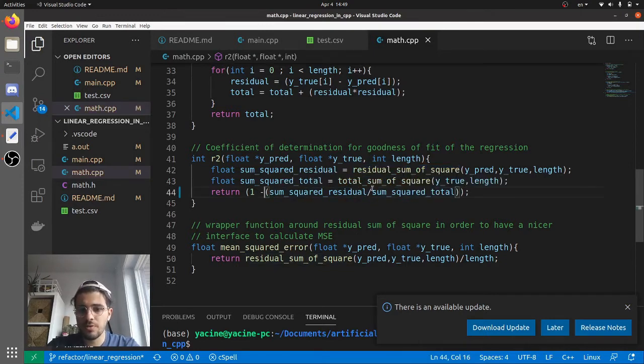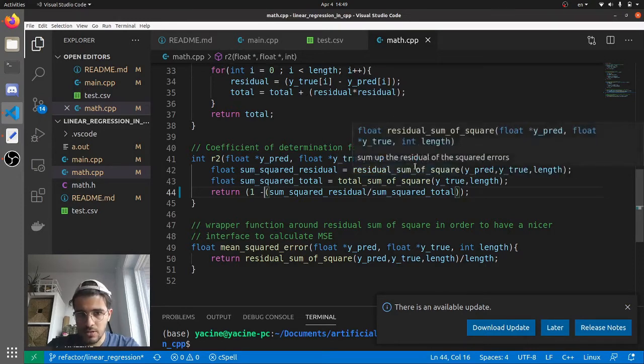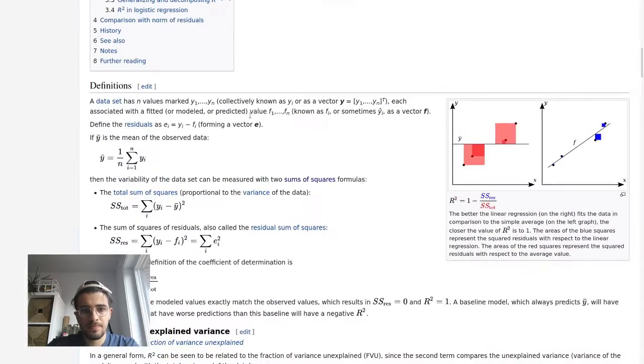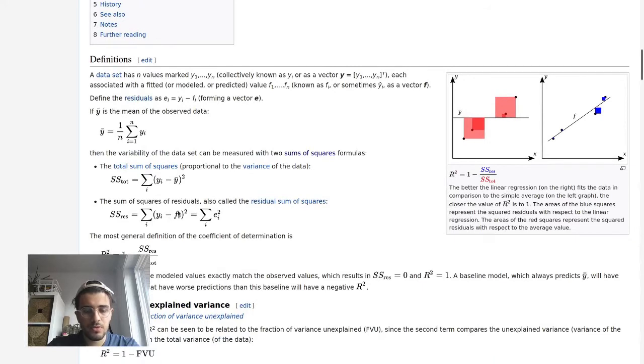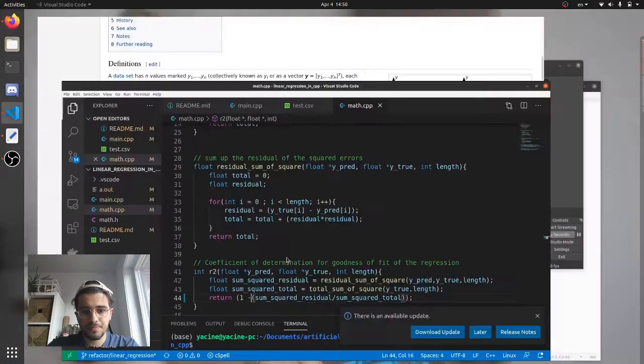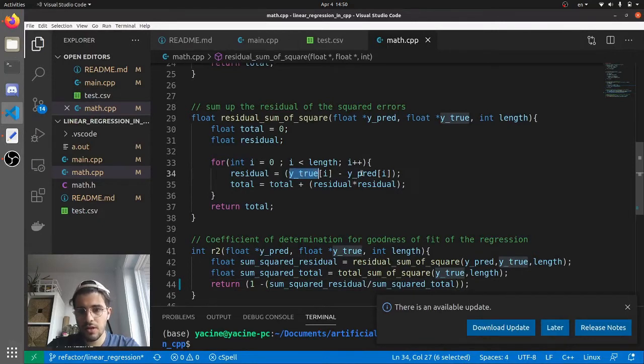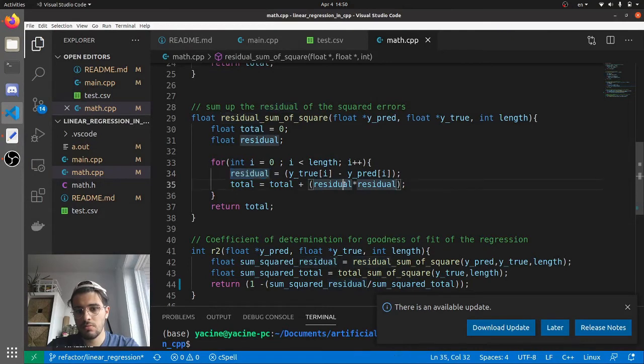It's fairly straightforward. So if you look at the residual sum of squares first, it's just a for loop. And what you want to do is the following: you want to have your y's, your prediction, you subtract the two and you put it exponent 2. And this is what we're doing. We're doing the residual here, so you have your true value minus the predicted, and then you just do the exponent 2.